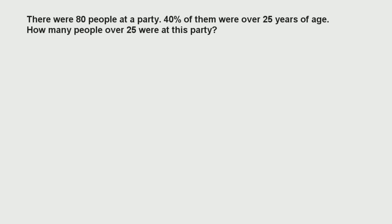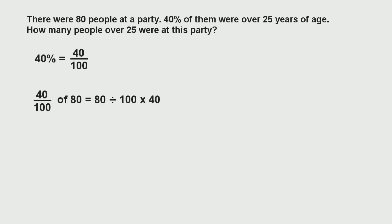The way we do this is to find the equivalent fraction of the percentage. So 40% is 40 out of 100 — that's what 40% means — or 4 out of 10, or 2 fifths. Thinking of it as 40 out of 100 may make things easier. To find a fraction of a number, we take the number, divide it by the denominator, and times it by the numerator.